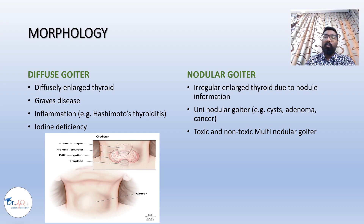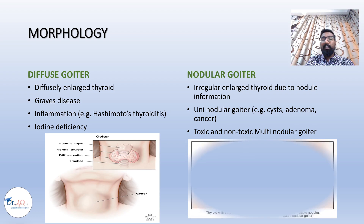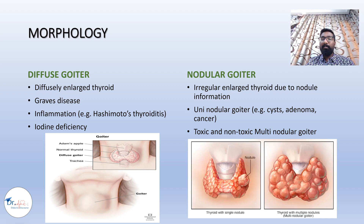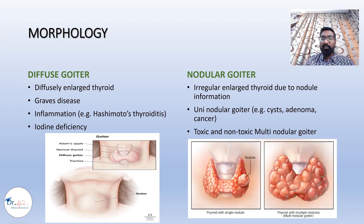In nodular goiter, the whole thyroid gland is not involved. It can be uninodular — for example in thyroid cyst, thyroid adenoma, or thyroid cancer — or it can be toxic multinodular goiter, where there are many nodules. There is a pictorial representation of uninodular as well as toxic multinodular goiter.